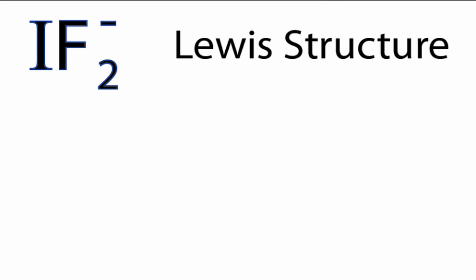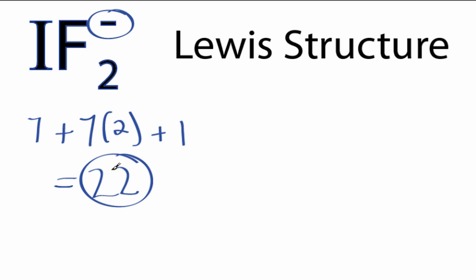This is the IF2 minus Lewis structure. Iodine, 7 valence electrons. Fluorine also has 7, but we have 2 fluorines, and then we have an extra valence electron from that negative sign, for a total of 22 valence electrons.